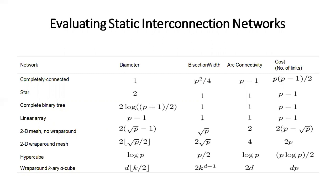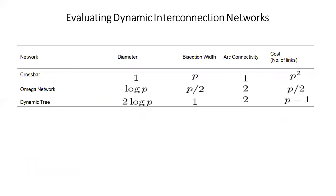Dynamic interconnection networks include three types: crossbar, omega network, and dynamic tree. This covers all the network topologies of parallel platforms — from bus to hypercube, mesh, star connected, fat tree, tree-based networks, and others.